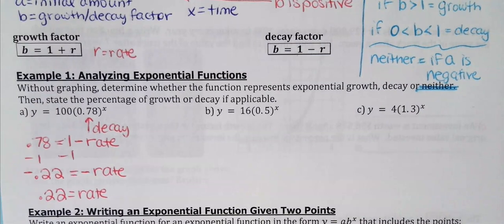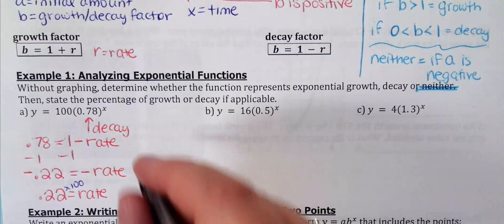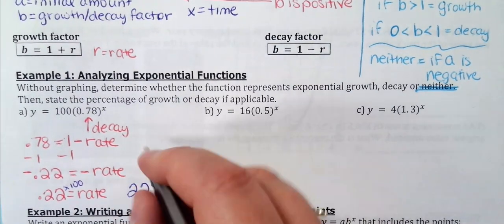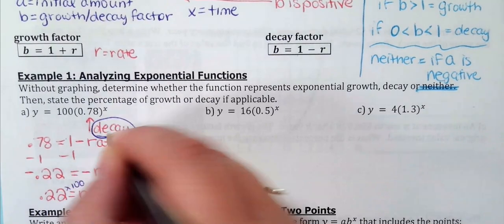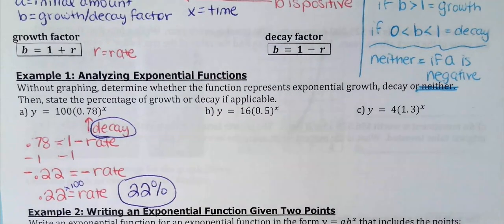So 0.22 is the rate. To change a decimal into a percent, just multiply by 100. So this is 22% decay. Another way to think about it: if you got a 78 on your test, I took away 22%. So the decay factor is the difference between that number and one — 78% of the value remains, 22% decays.